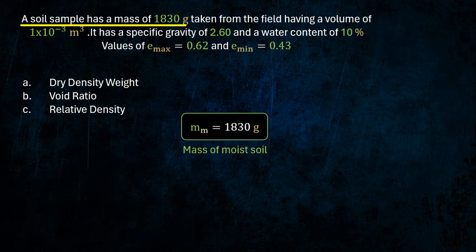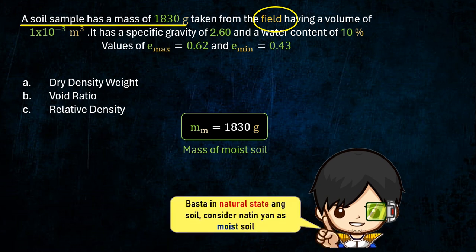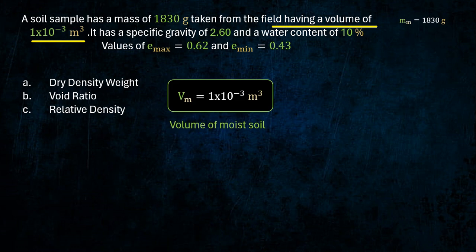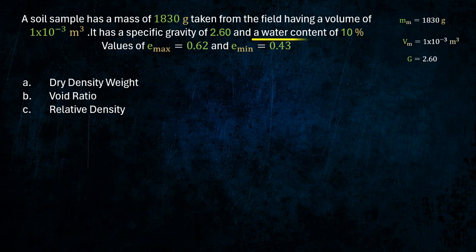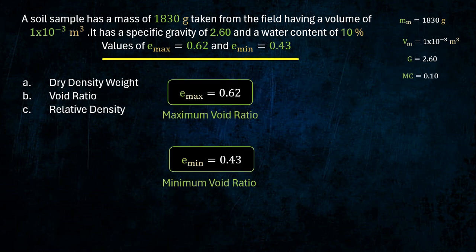Given: mass of moist soil, volume of moist soil, specific gravity, moisture content, maximum and minimum void ratio.